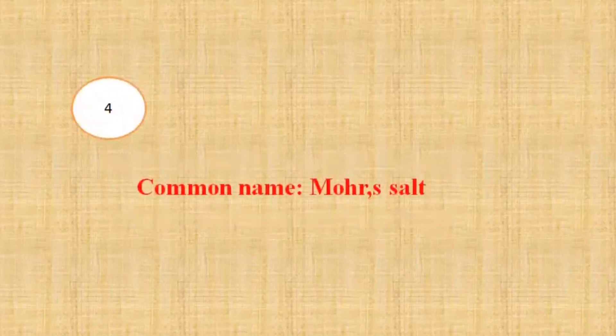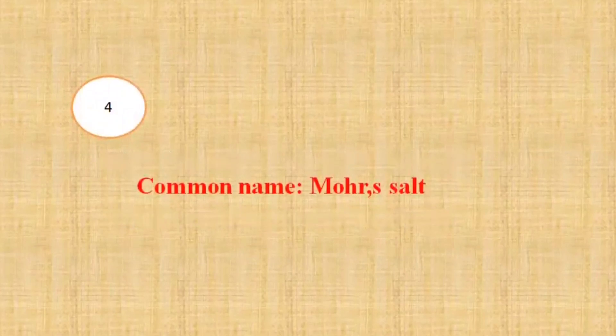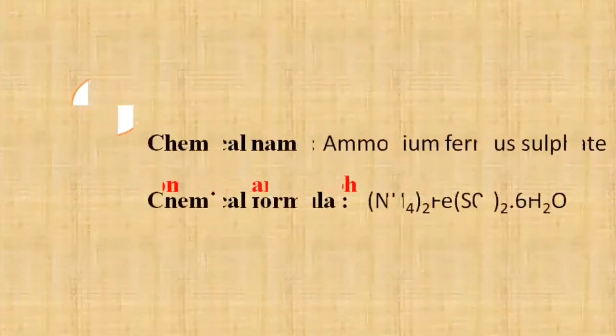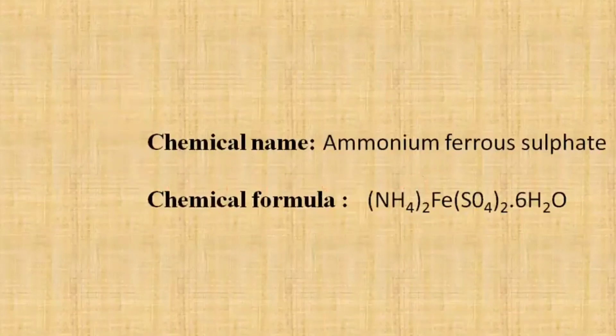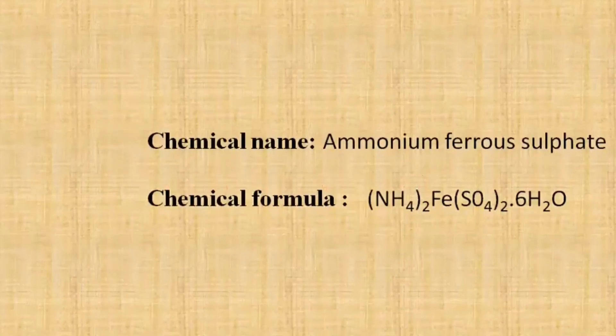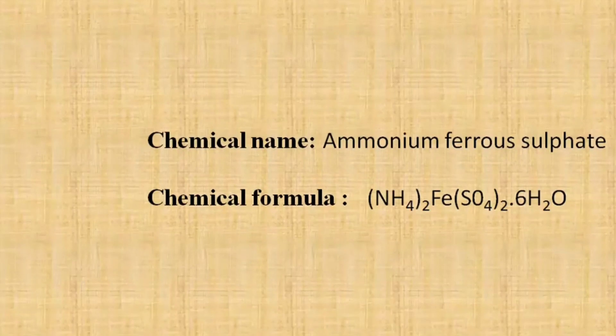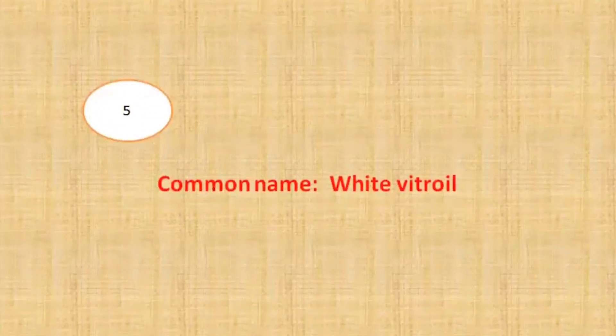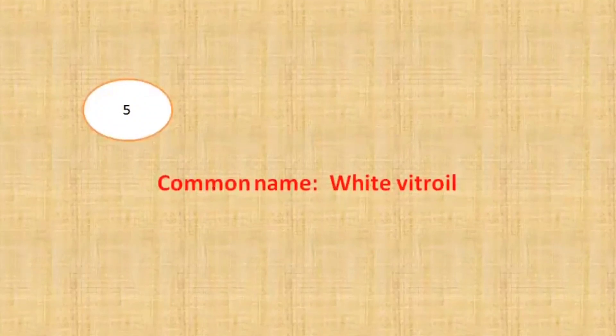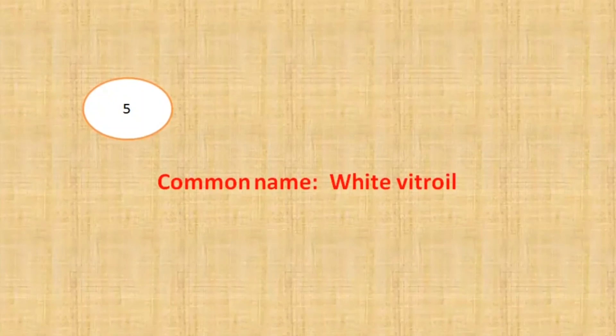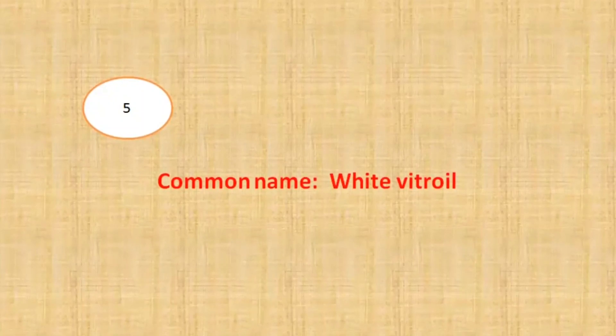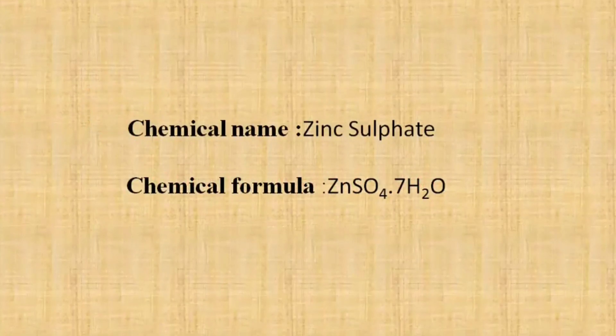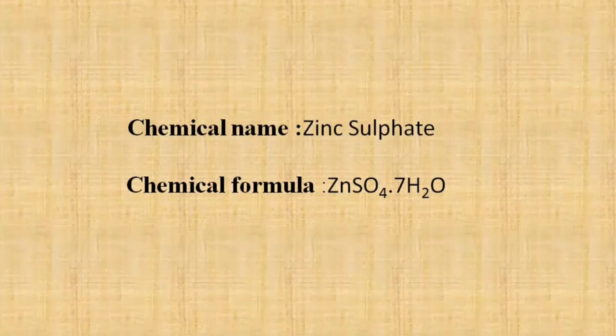Our next question is what is the chemical name of Mohr salt? It is ammonium ferrous sulfate and its chemical formula is also given in the hydrated form. What is the chemical name of white vitriol? The chemical name of white vitriol is zinc sulfate and its chemical formula is ZnSO4.7H2O.